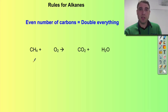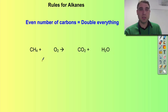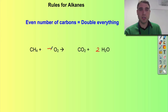We'll start by looking at methane. In this case we only have an odd number of carbons — we've only got one carbon — so we don't need to double everything. We've got one carbon here and one carbon on the products side. We've got four hydrogens here but only two on this side, so I need to double the number of water molecules. Looking at oxygens: two here plus two here gives a total of four, so I need two oxygen molecules to balance it out nicely. That's nice and easy.